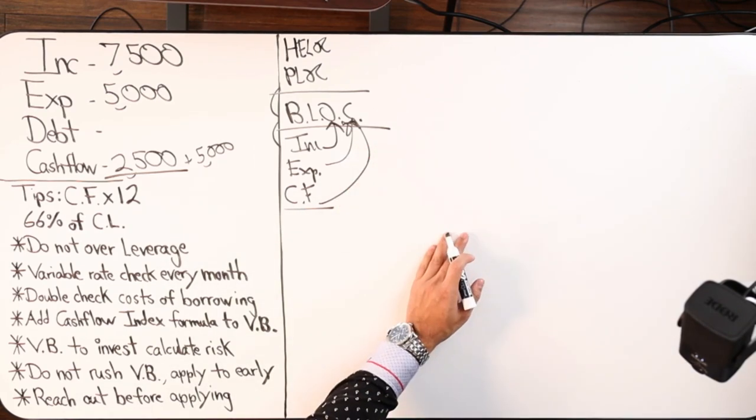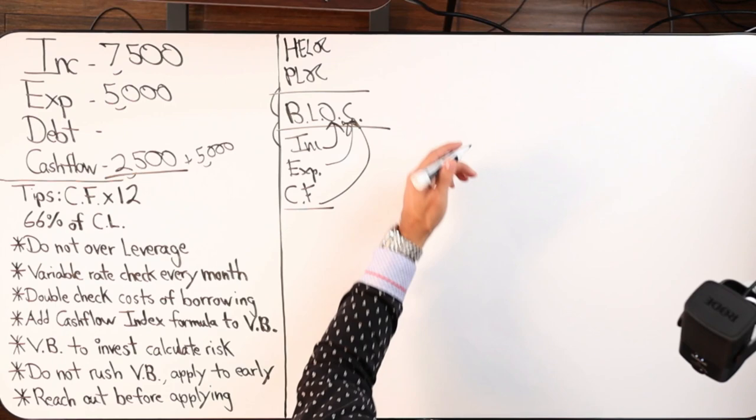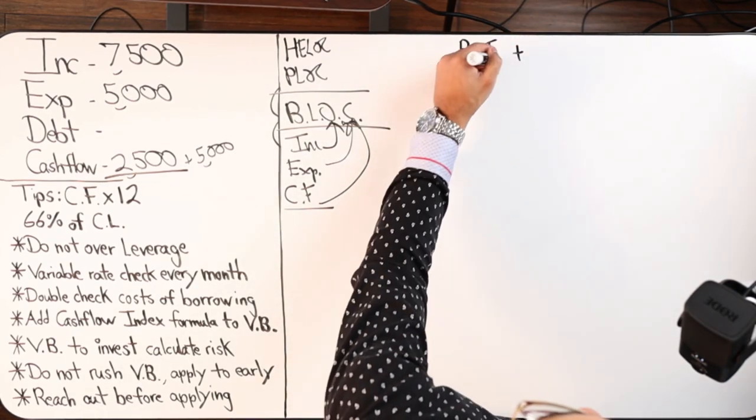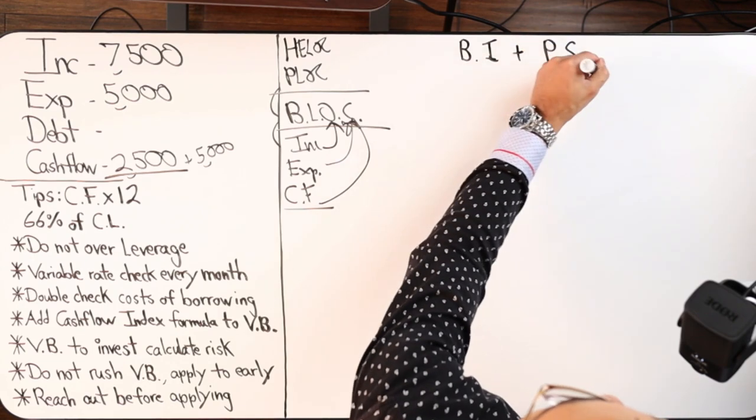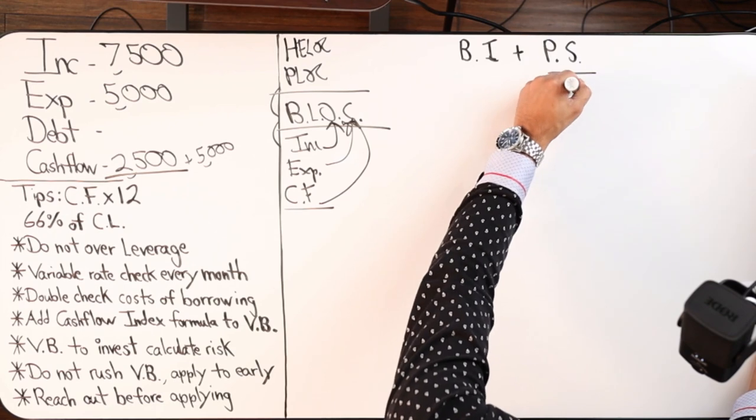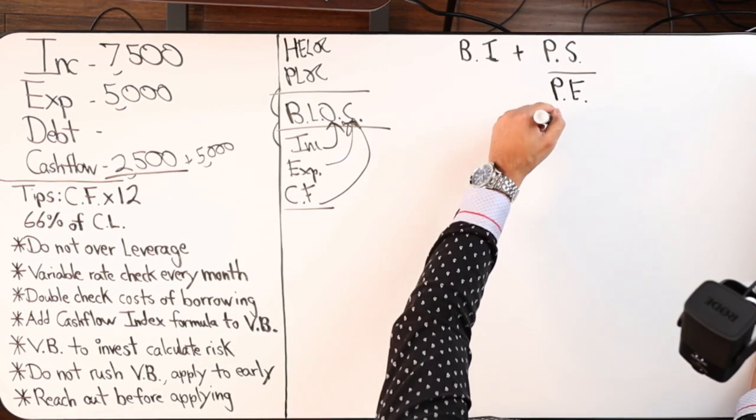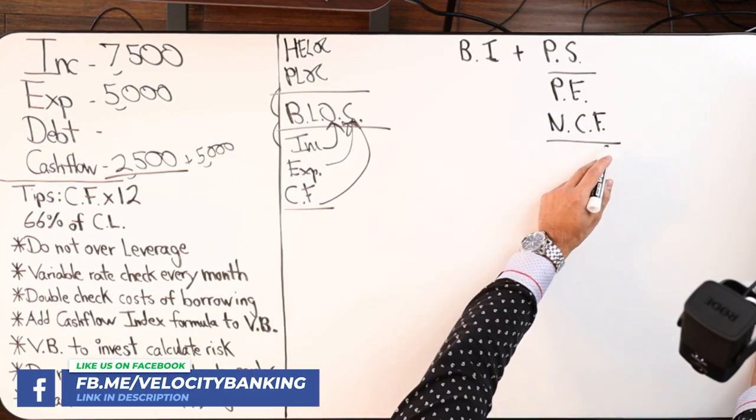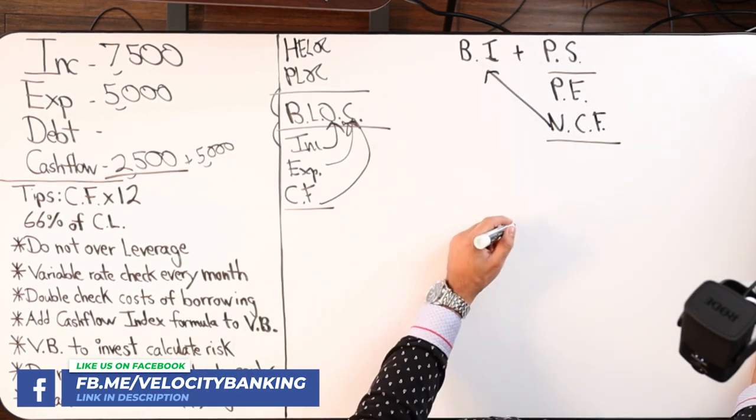So what can happen is let's say you're a business owner, you have your business income plus your personal salary. So your salary will cover your personal expenses, any net cash flow you can send that back to the business.